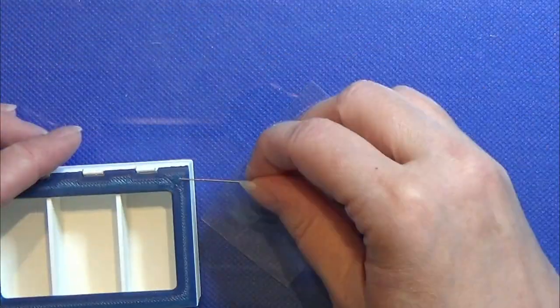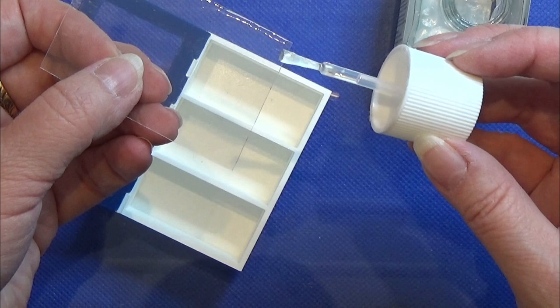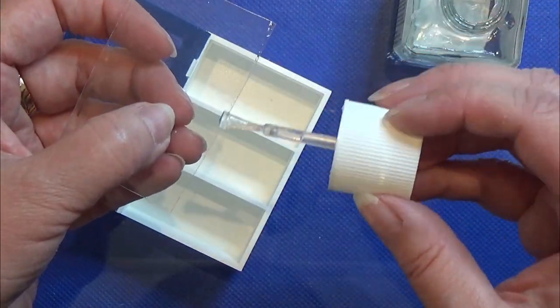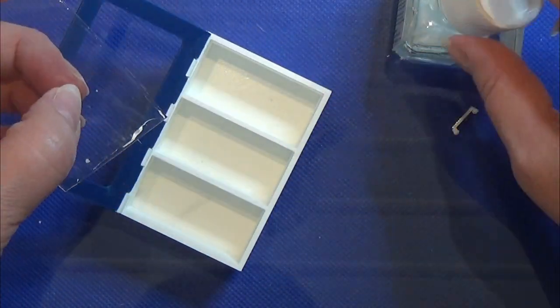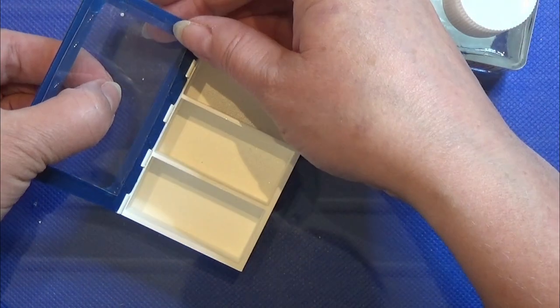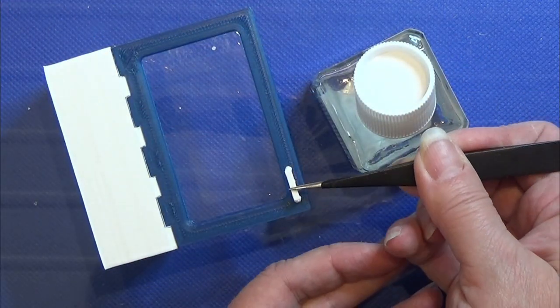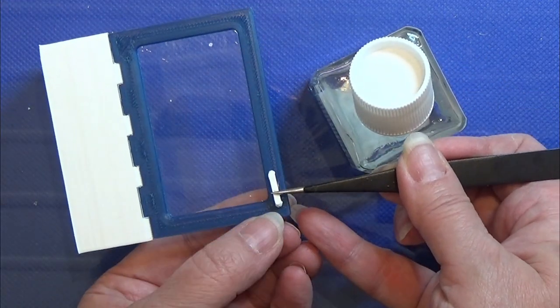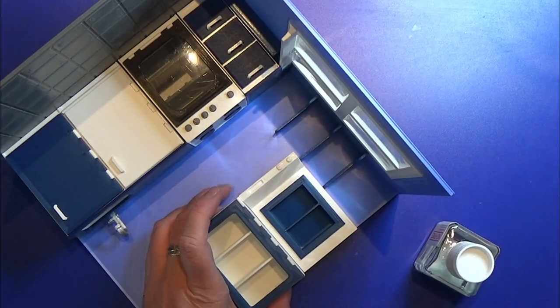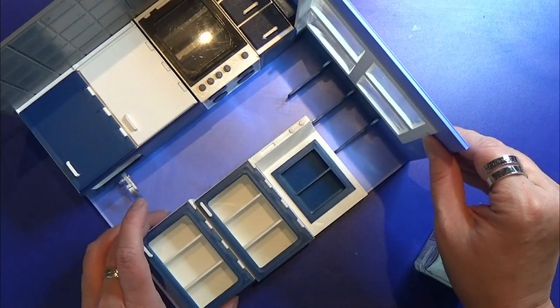I printed two wall cabinets, and again I used some clear packaging plastic for the door, and I placed the door with this wire just like all the other doors. And I'm going to glue them in place also.